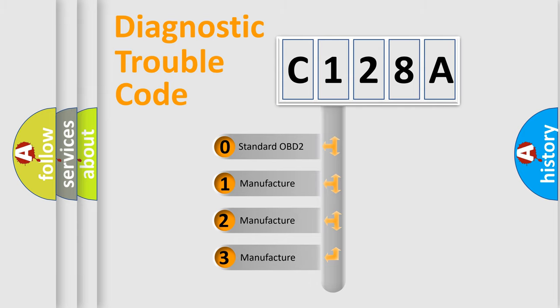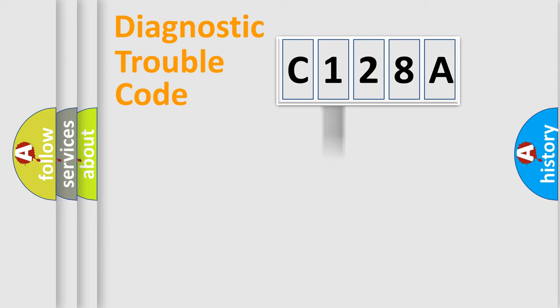If the second character is expressed as zero, it is a standardized error. In the case of numbers 1, 2, 3, it is a more precise expression of the car-specific error.